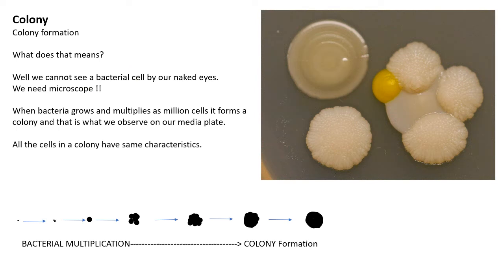So what is a colony? We mostly need a microscope to observe a single bacterial cell — we cannot observe it with the naked eye. But when we provide all the required nutrients and environmental conditions for optimal growth, bacteria start growing and multiplying, producing millions of cells, and that forms a colony which we observe on a media plate.